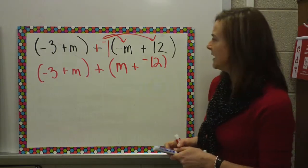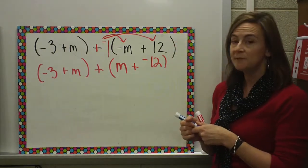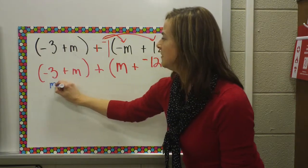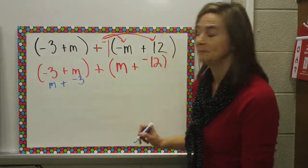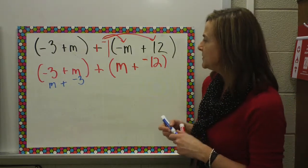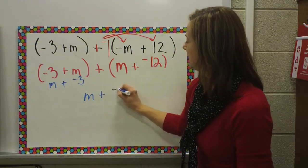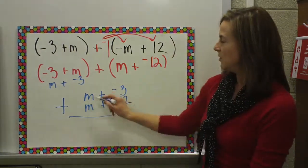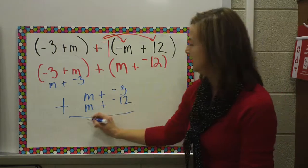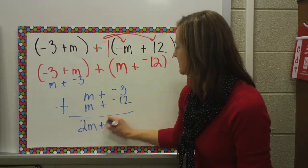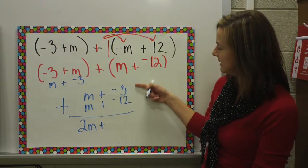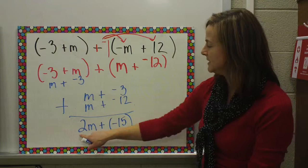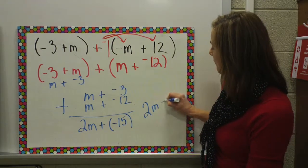My next step on my list says to make sure that I have my variable term first, and then my constant. I'm okay here, but here I have to switch this. So instead of negative three plus m, I have m plus a negative three. Next, I'm going to line them up: m plus a negative three, and m plus a negative twelve. So I have one m plus one m, that means there are two m's. And negative three plus negative twelve — same signs, add — so that would give me a negative fifteen. Because I want it simplified with no parentheses, I'm going to rewrite this as two m minus fifteen.